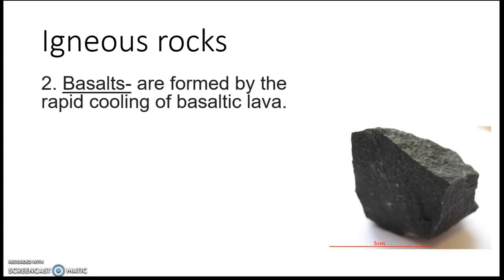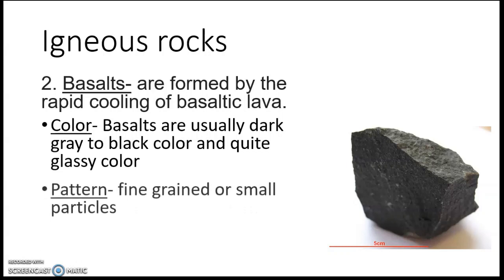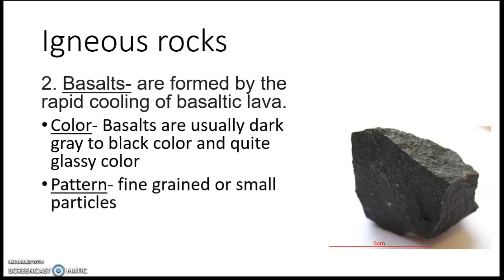The second igneous rock is basalt. Basalt is formed by the rapid cooling of basaltic lava. Look at the picture — the color of basalt is usually dark gray to black, and quite glossy. The pattern is fine-grained, or small particles, and the weight of the basalt stone is heavy.